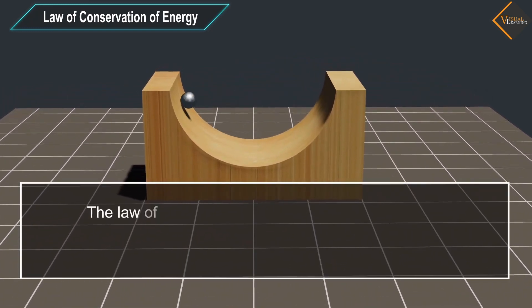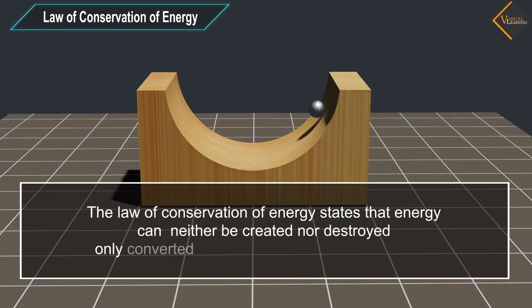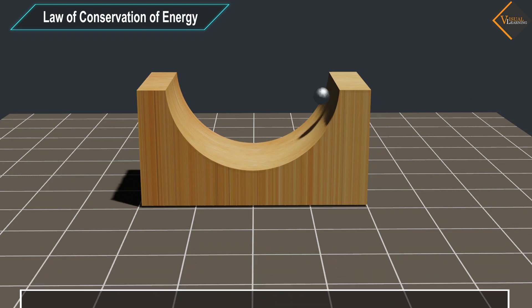The law of conservation of energy states that energy can neither be created nor destroyed, only converted from one form of energy to another. This means that a system always has the same amount of energy unless it's added from the outside.